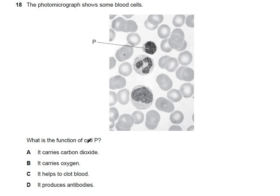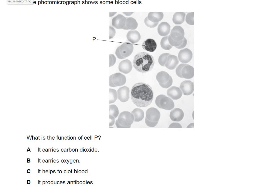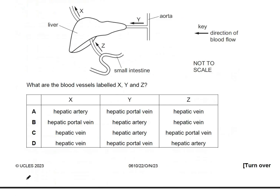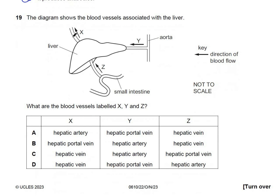Question 18: a photomicrograph shows blood cells. Cell P has a very large nucleus, which identifies it as a lymphocyte. The other cell with a lobed nucleus is a neutrophil. The function of lymphocytes is to produce antibodies. The answer is D.